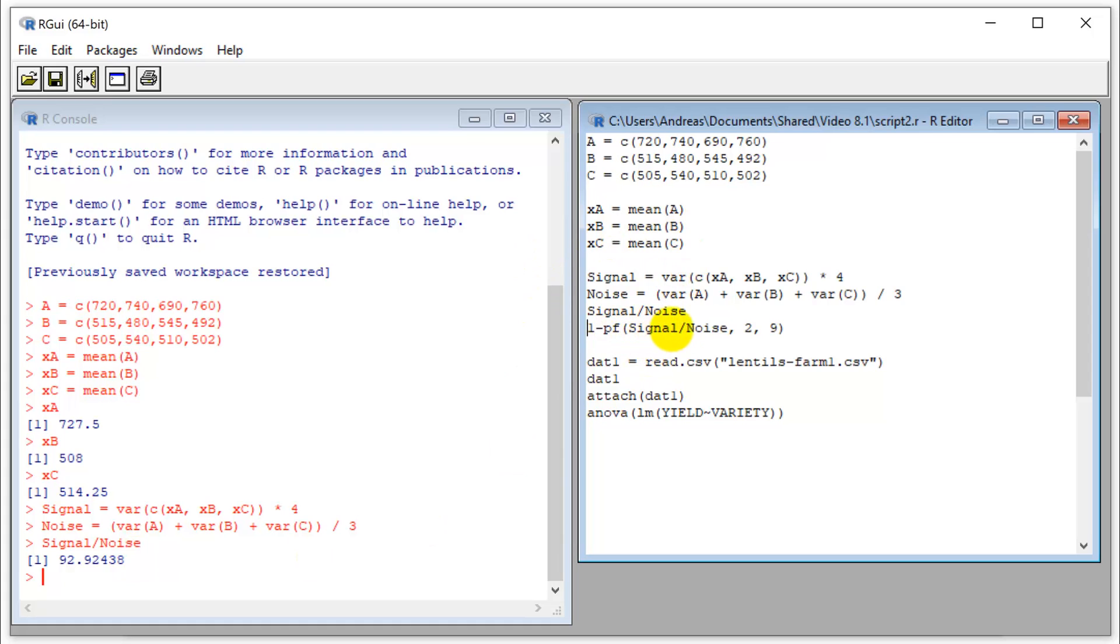I can now also do something similar. I can do a unit conversion from the f statistic to p value. We'll take a look at this in a minute. Instead of the pt function, we have the pf function. In order to get a p value, I do one minus that.